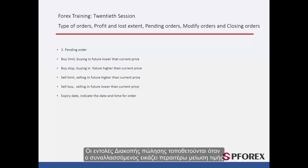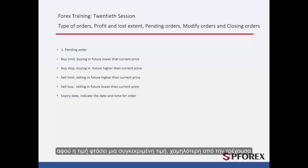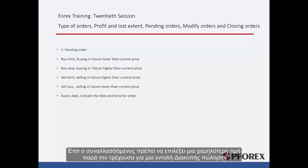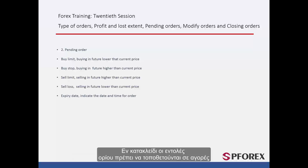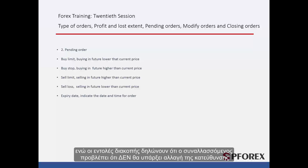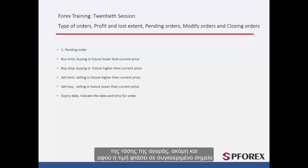Sell Stop orders are placed whenever further price reduction is anticipated by a trader, after the market price meets a certain lower price rather than the current price. Hence a trader must select a lower price than the current price for a sell stop order. In conclusion, limit orders must be placed on markets that may have a direction change at a specified price, while stop orders indicate that the trader predicts there will be no direction change even after the price reaches a significant level.